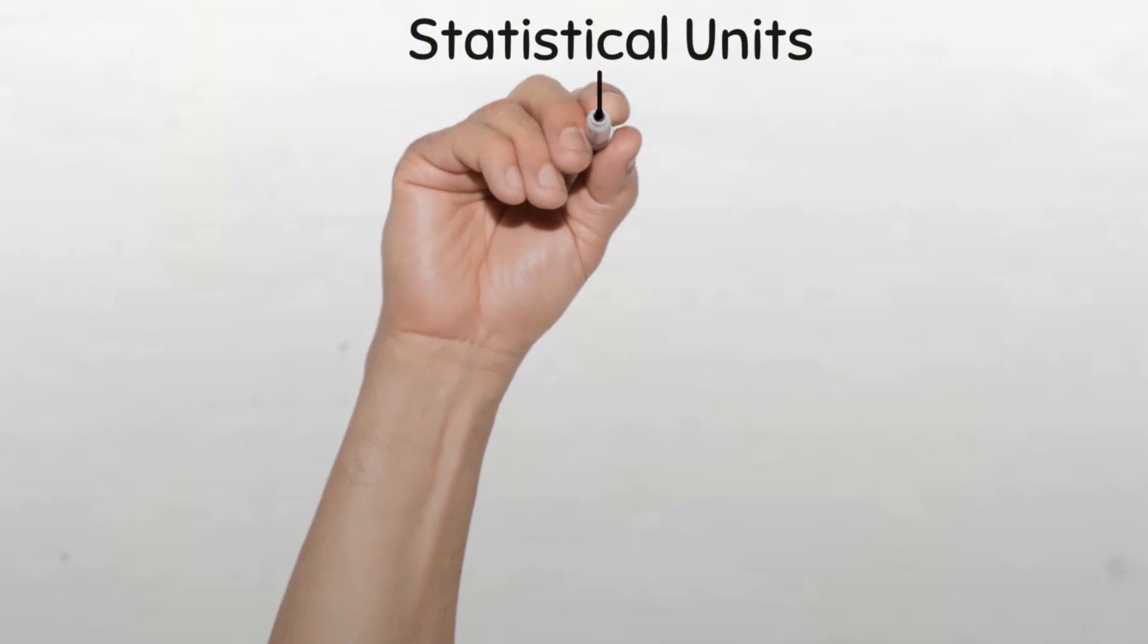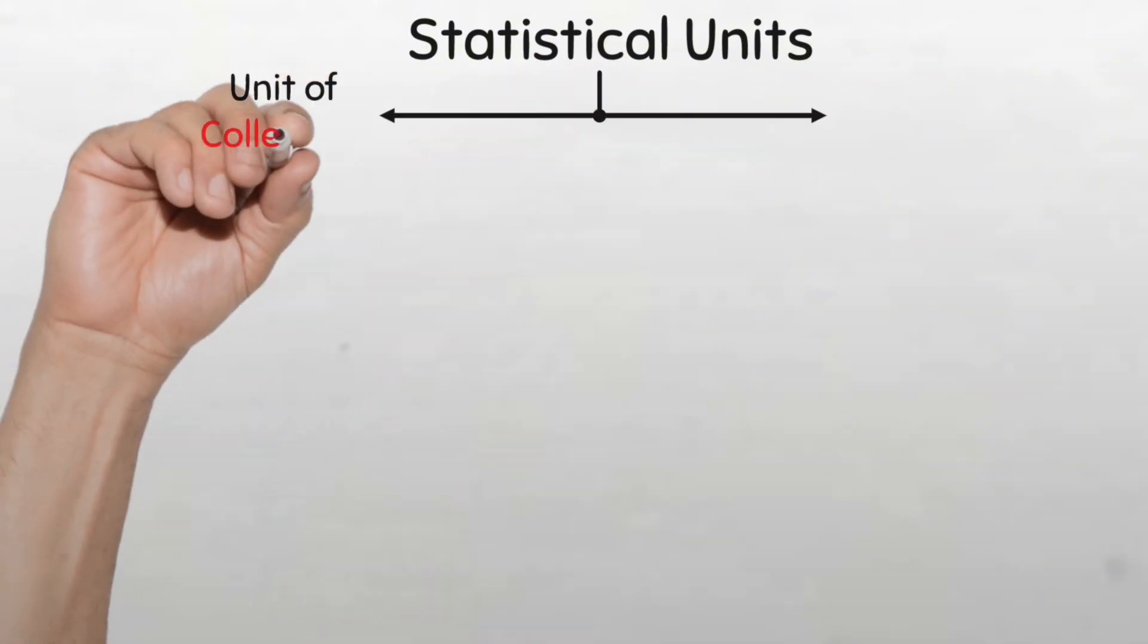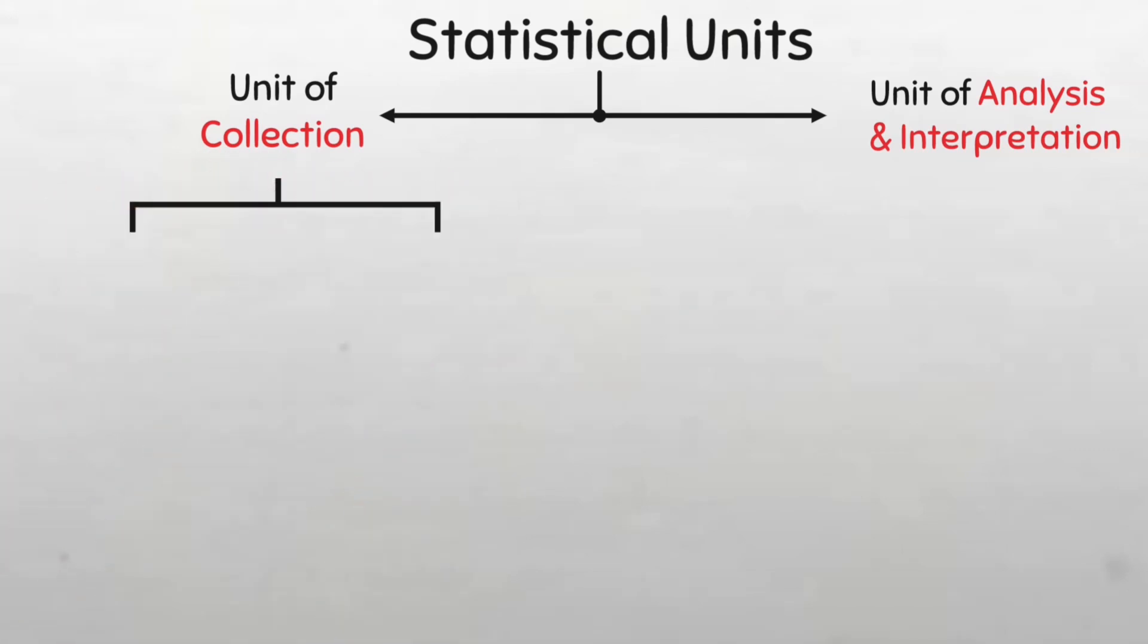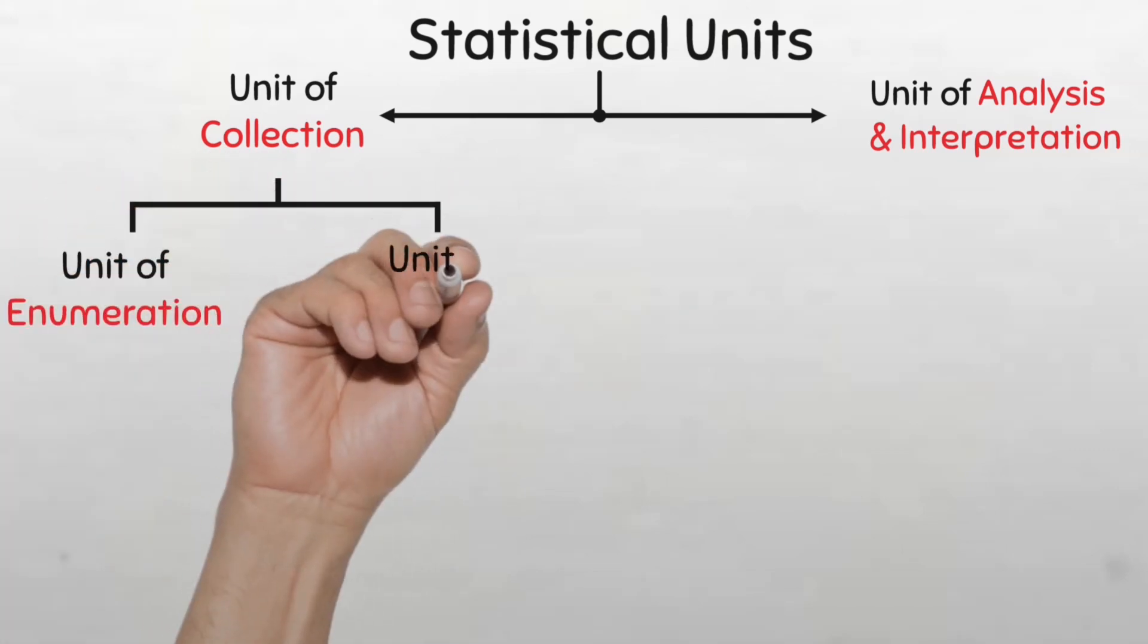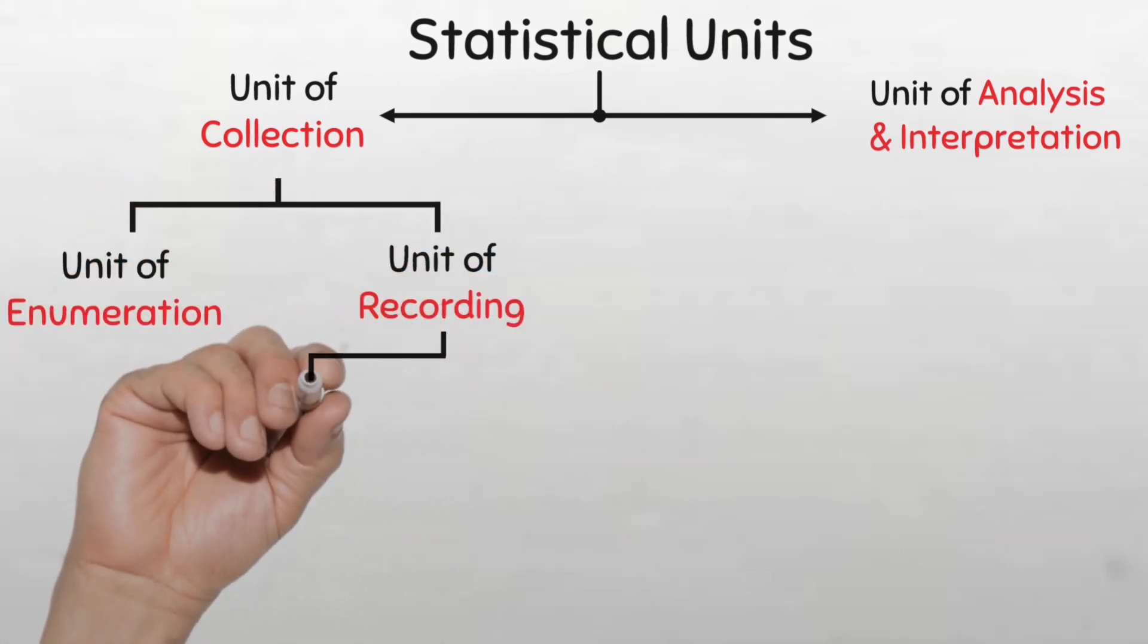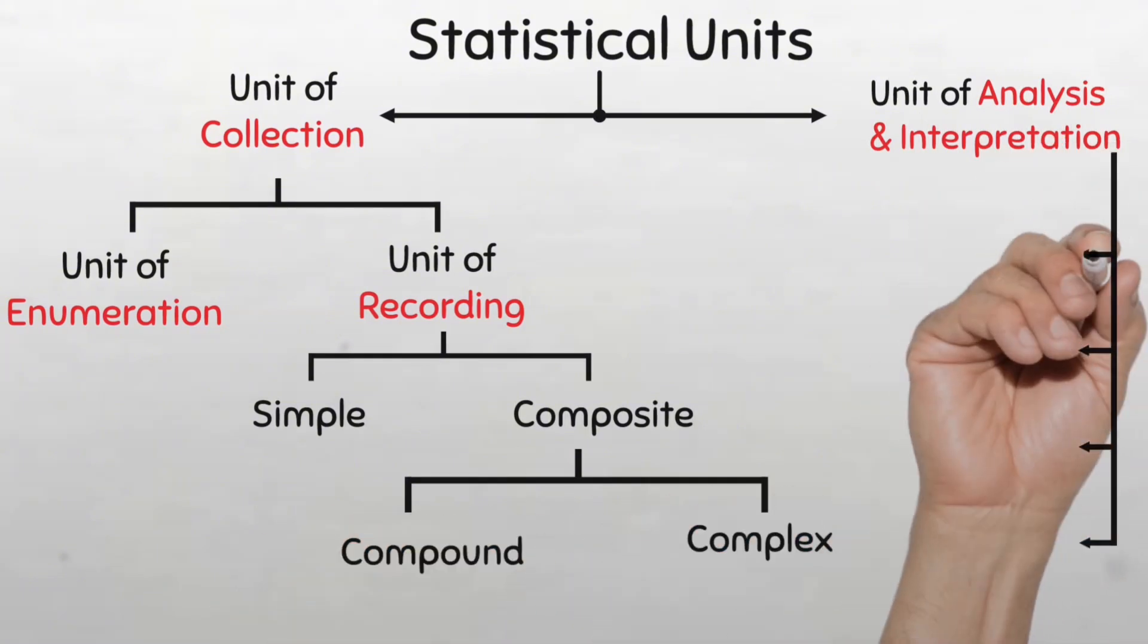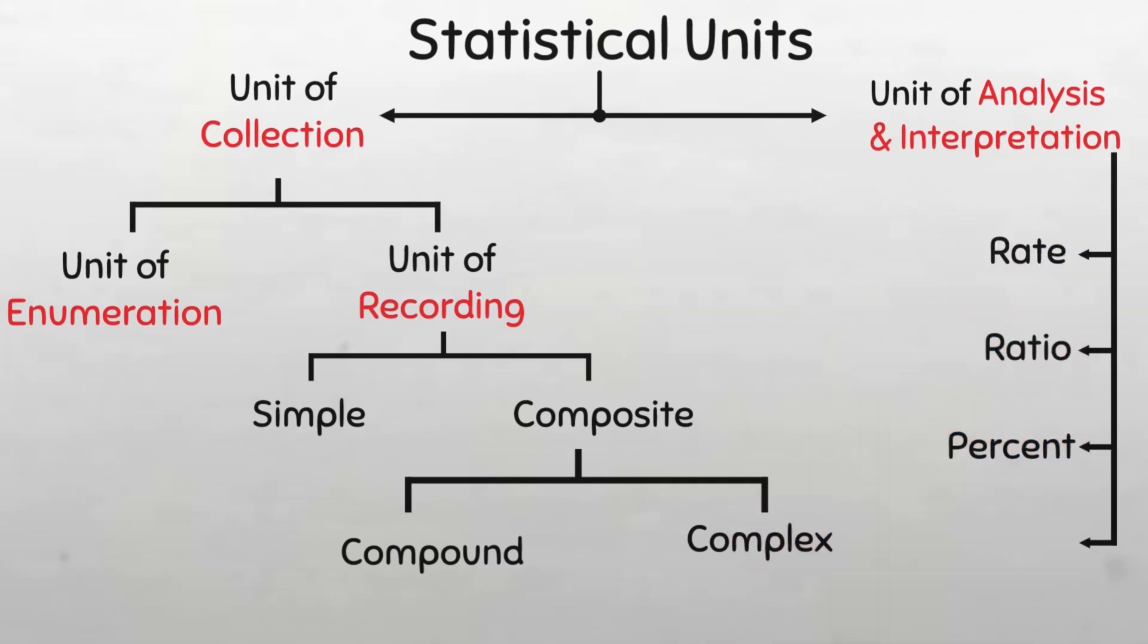So to recap, statistical units can be broadly classified into the units of collection and units of analysis and interpretation. The unit of collection can further be divided into two, units of enumeration and the unit of recording. The unit of recording can be either simple or composite. And the composite can either be compound or complex. On the other hand, the units of analysis and interpretation include rates, ratios, percentages, or coefficients. And these help us to interpret data.